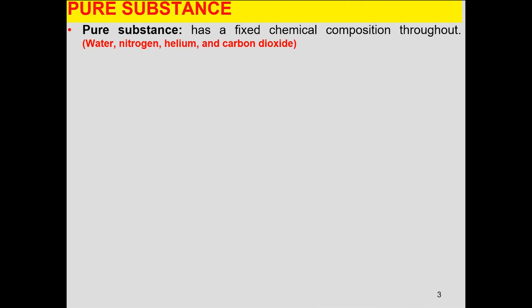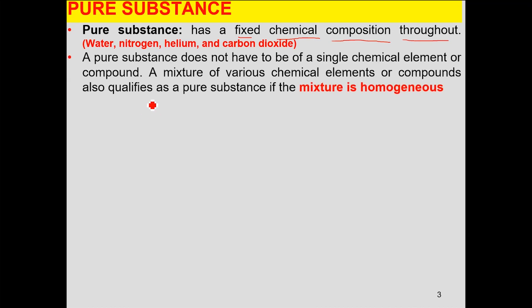So, what do you understand by a pure substance? The most common understanding is that a pure substance is a substance which is free from impurities, but in terms of thermodynamics that's not the correct definition. The correct definition is: a pure substance has a fixed chemical composition throughout. It is not necessary that your composition is fixed to an element or a group of elements.